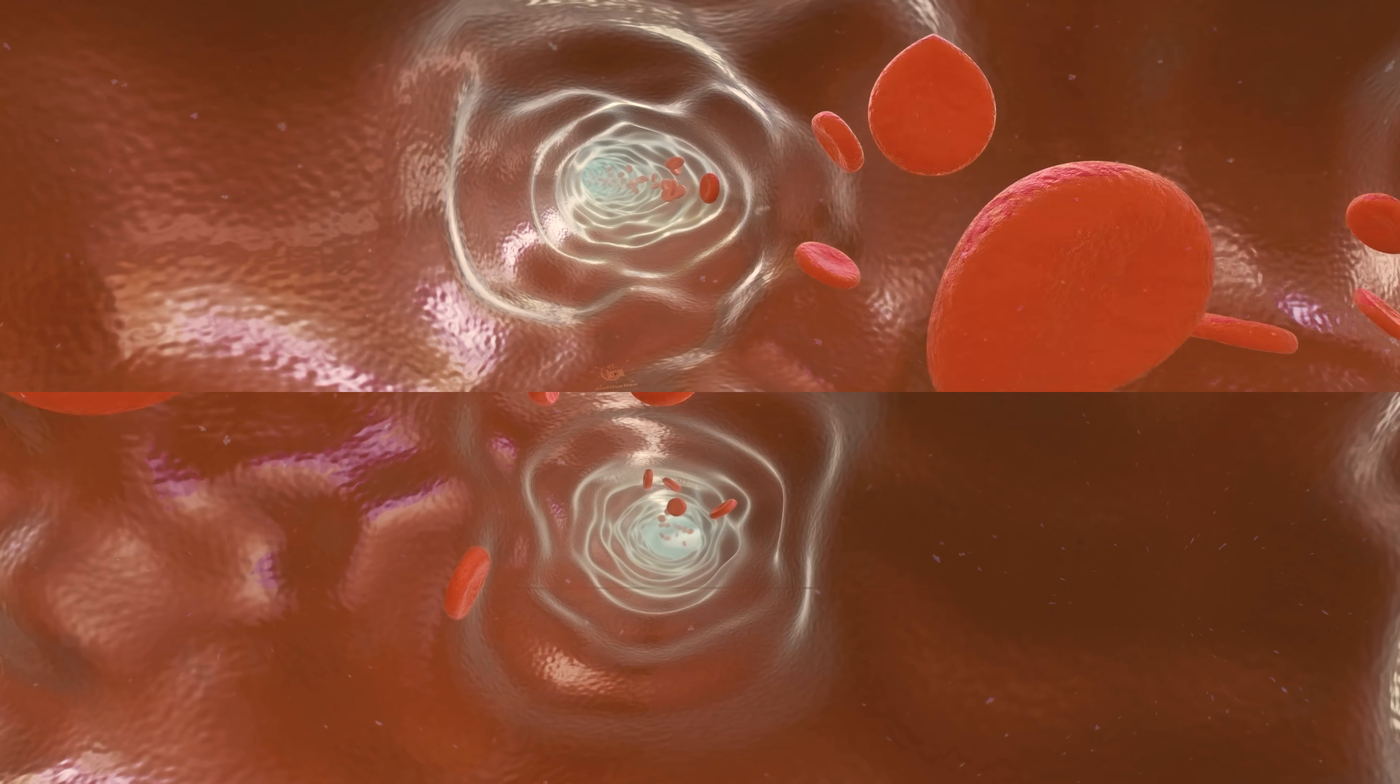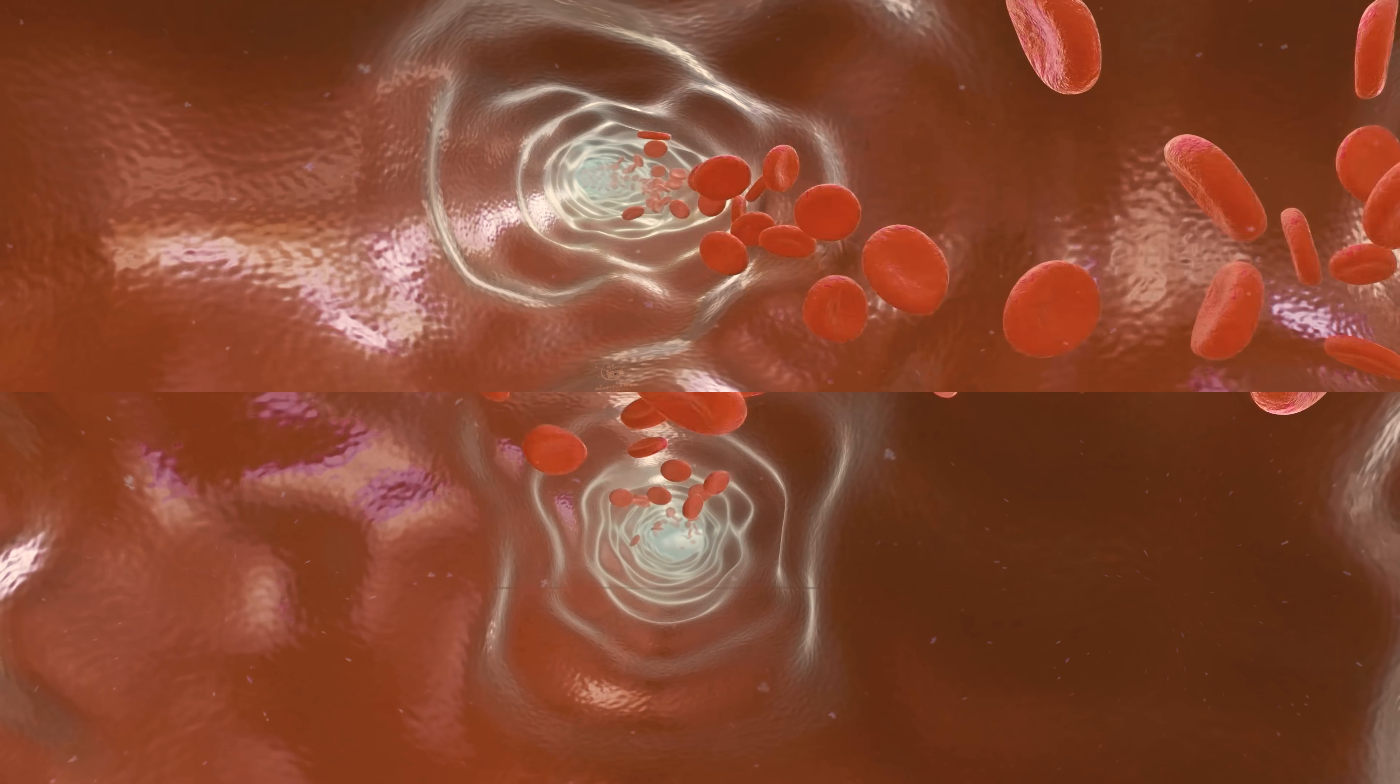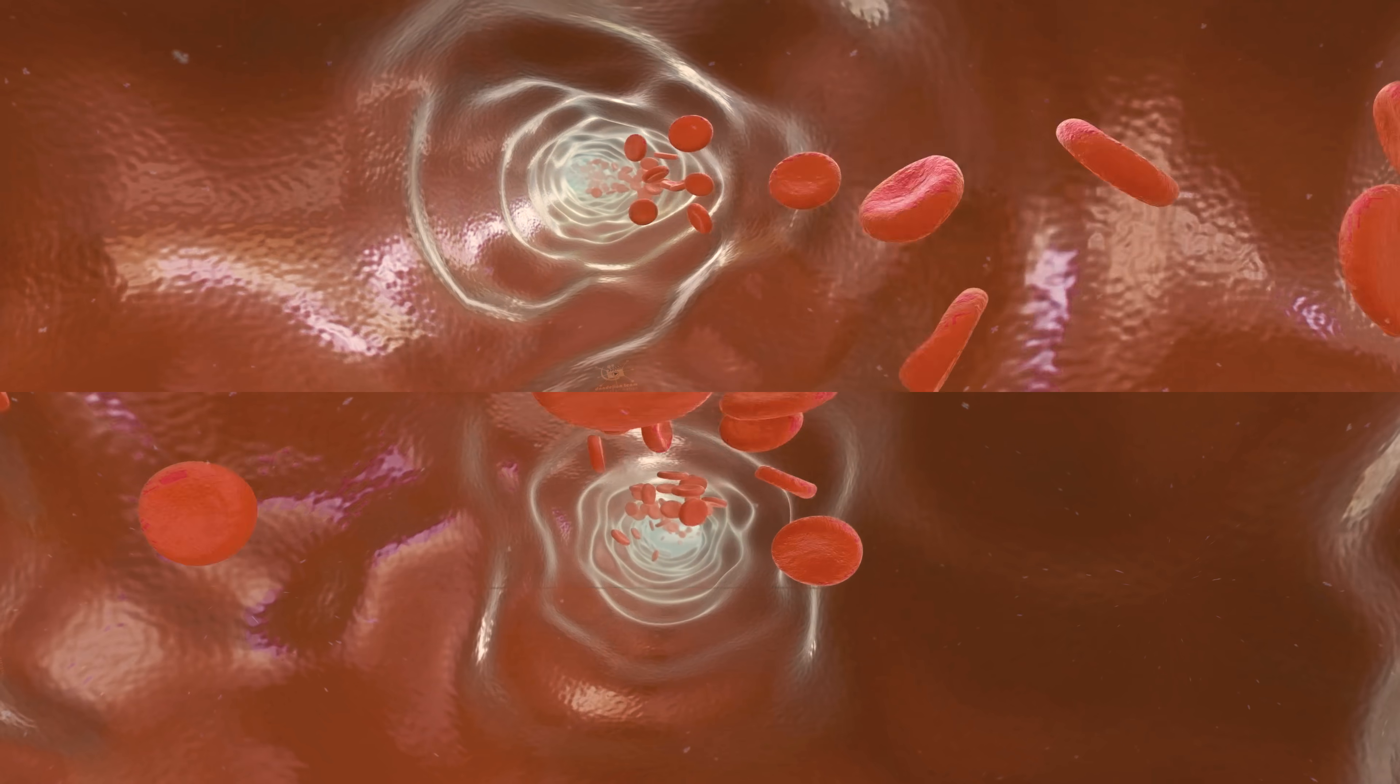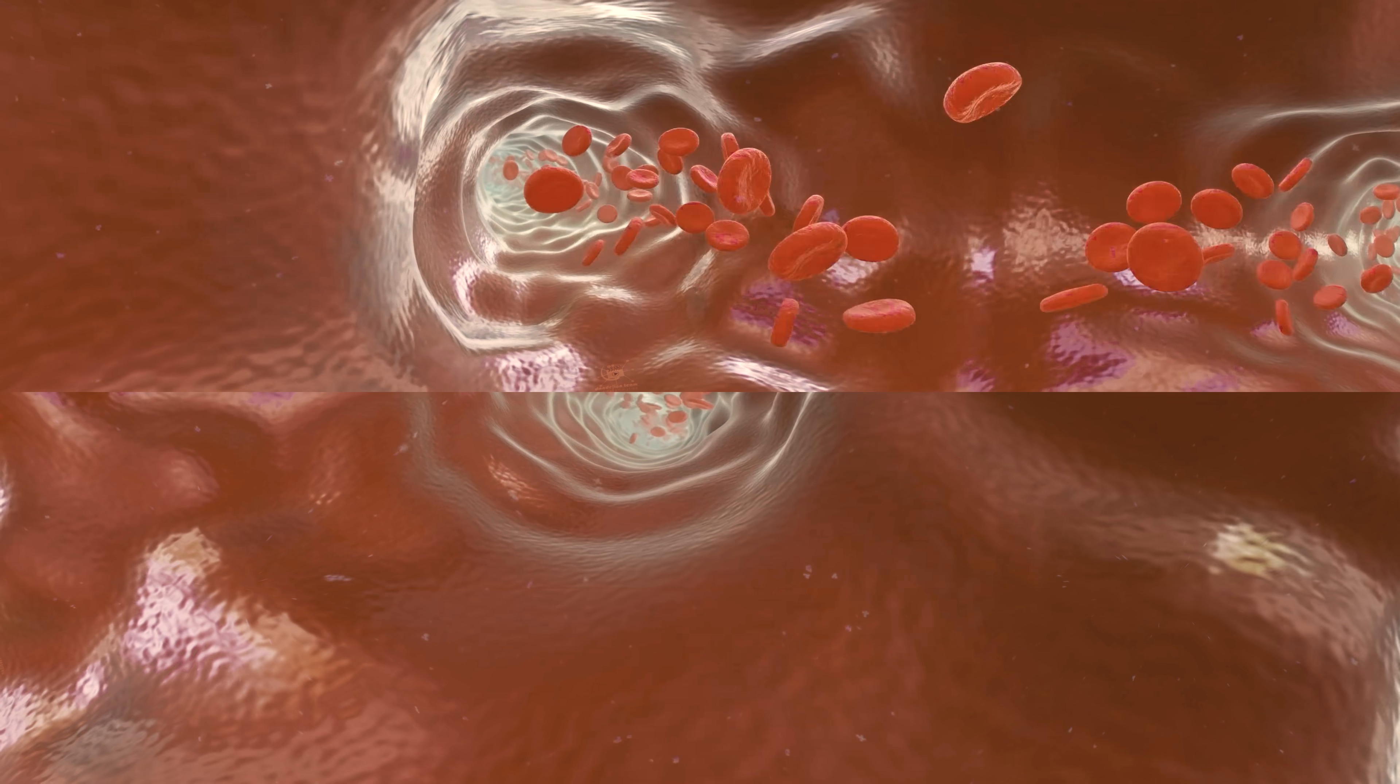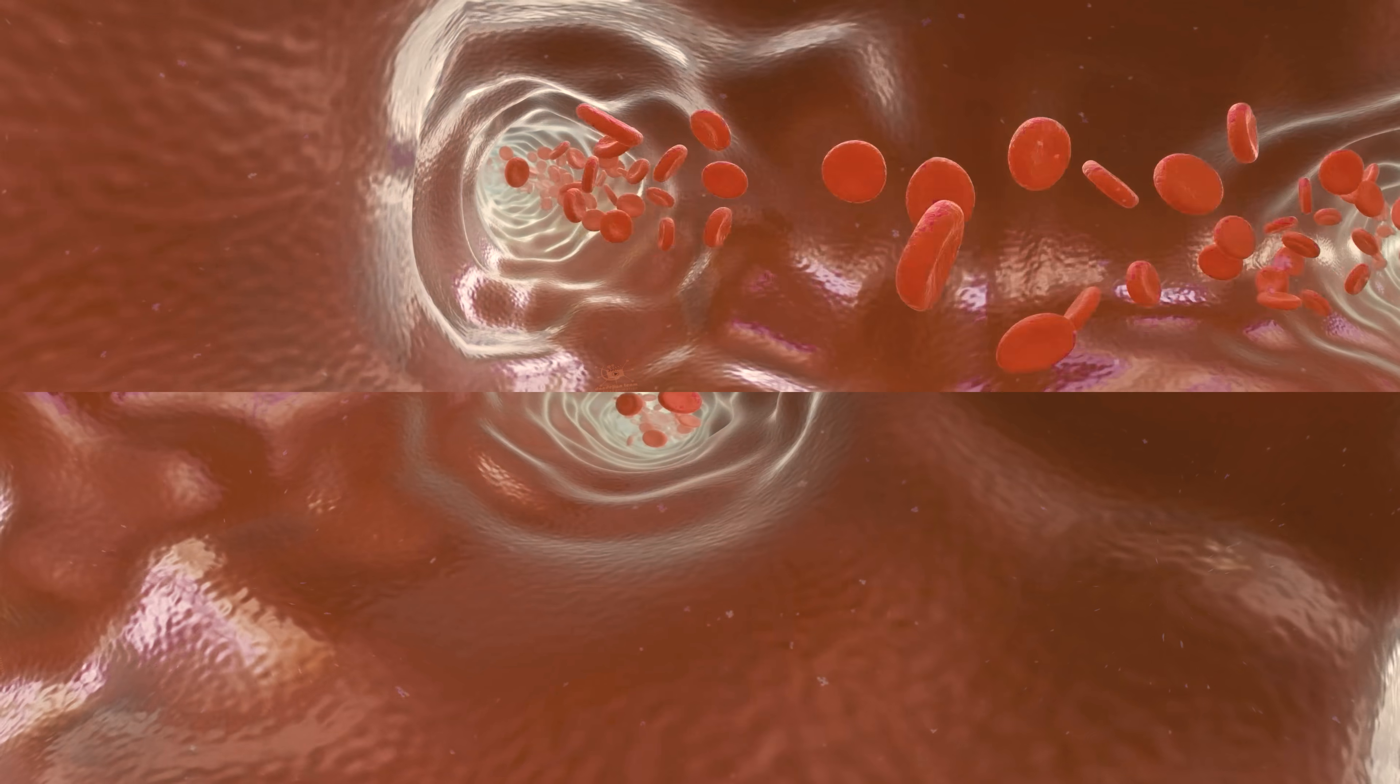The heart pumps blood throughout your body to give energy and oxygen to every cell. The circulation of blood is vital to sustaining life. As the blood moves, it pushes against the sides of the artery walls. The strength of this pushing is your blood pressure.